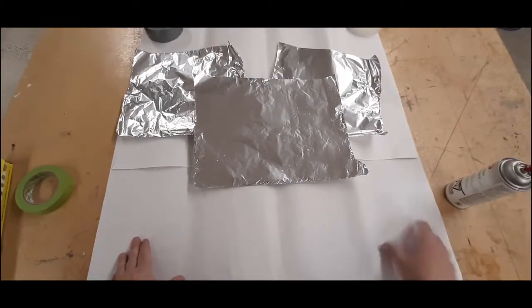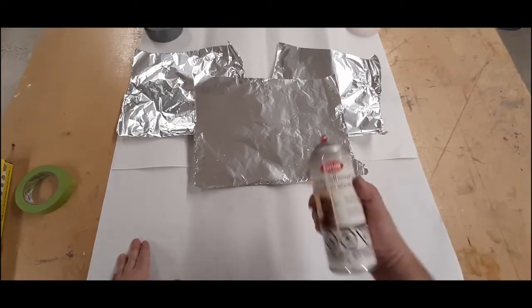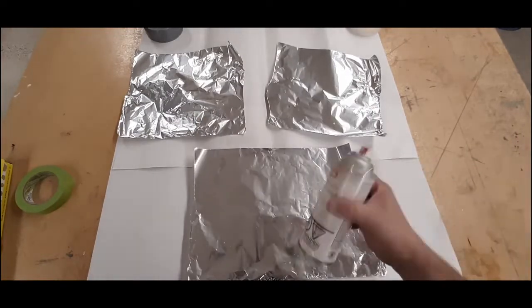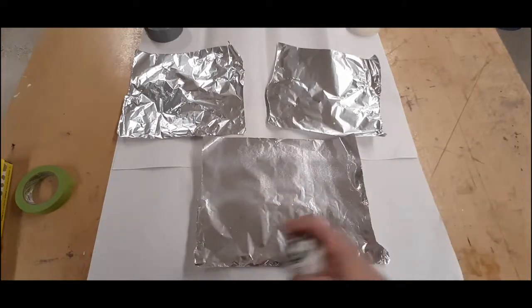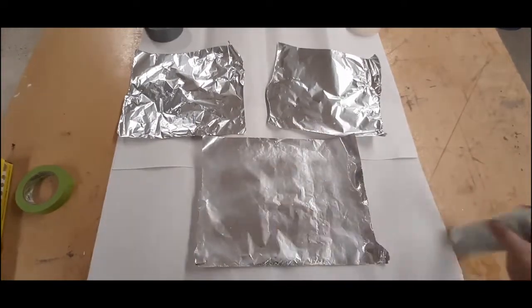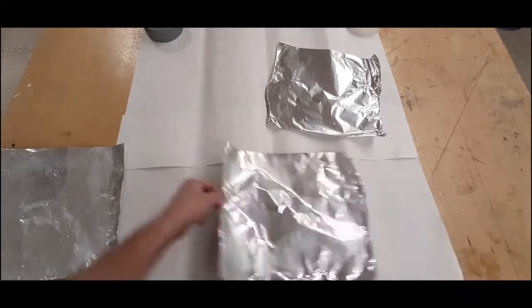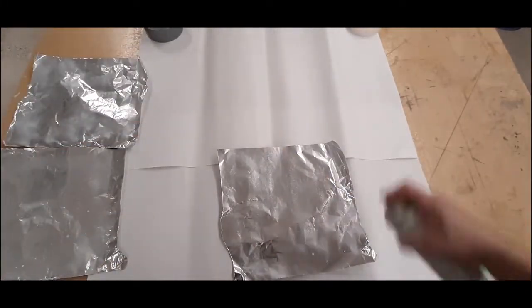Lay down some scrap paper or newspaper on your table to help with the overspray from the spray adhesive. This stuff gets very messy. Coat one side of each of the foil sheets. Wait for the spray adhesive to get tacky before you apply it. It won't take very long.